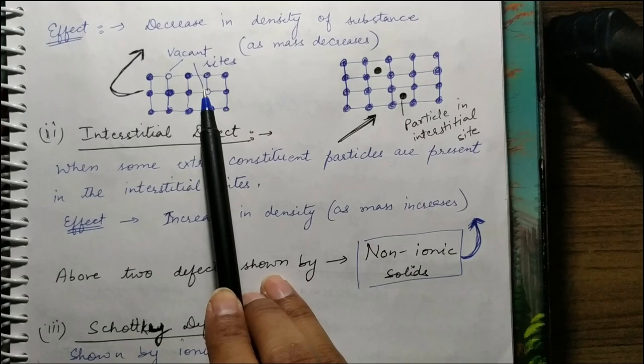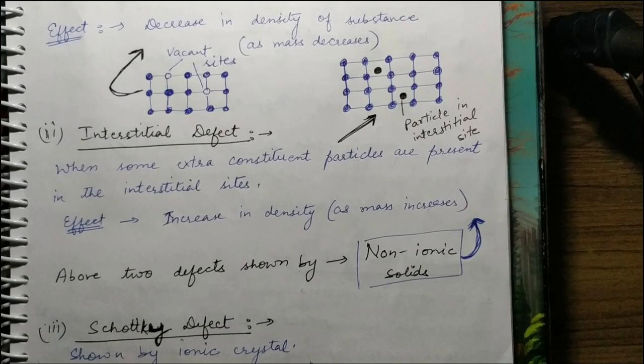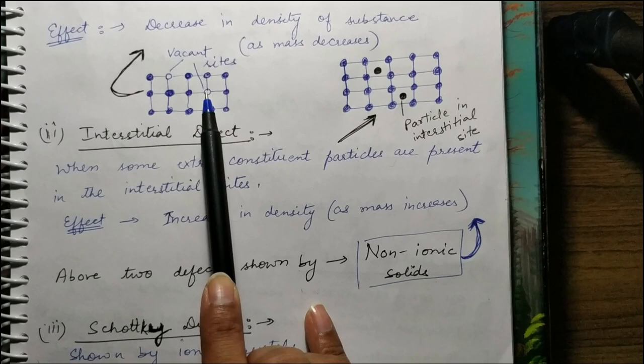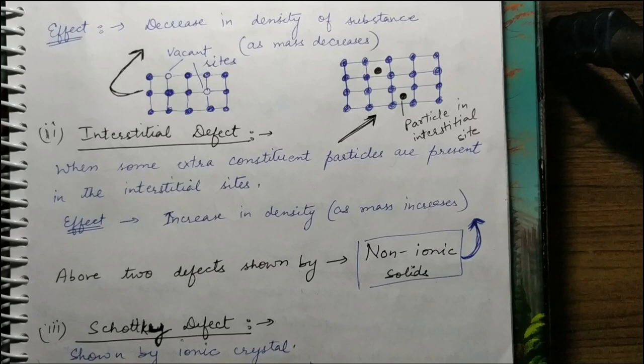In vacancy defect, a lattice point or site in the normal crystal lattice becomes vacant. If the crystal absorbs heat from surroundings, a vacant site is generated. In interstitial defect, a particle occupies an interstitial site within the lattice. Both of these defects occur in non-ionic solids.